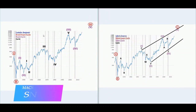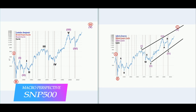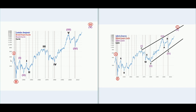When it comes to the S&P 500, counting the wave as an impulse would cause a problem, and I will tell you why — because this wave 4 overlaps with wave 1. So the only way counting it as an impulse would be a correct count is to count the cycle waves as the extension.